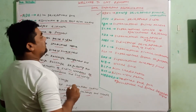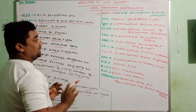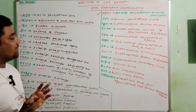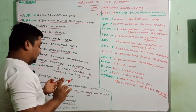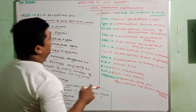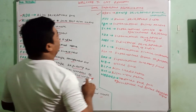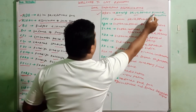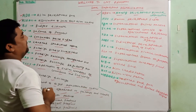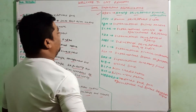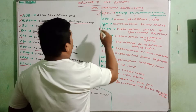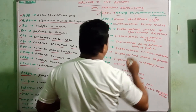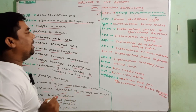HDFC means Housing Development Finance Corporation — it is a private sector bank, very profitable, second after SBI. HDI means Human Development Index.